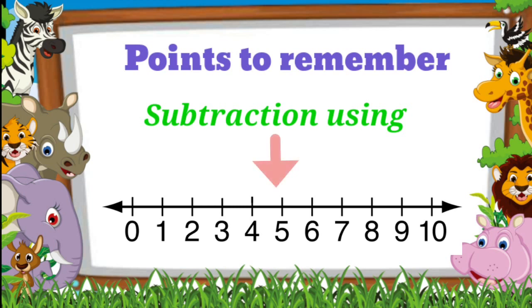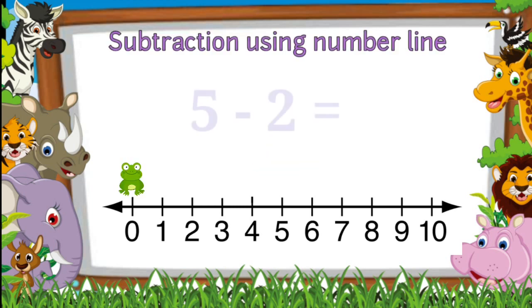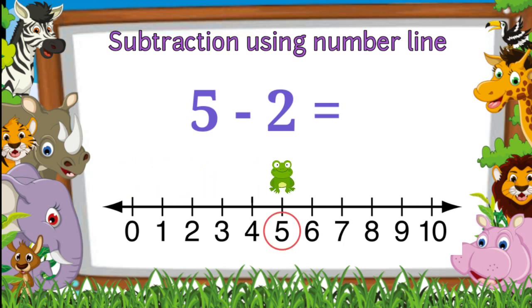Five minus two. When we do number line subtraction, we should always start with the first number. Now tell me, which is the first number? Yes, five is the first number. So the frog starts at number five, and then moves two places towards the left side.